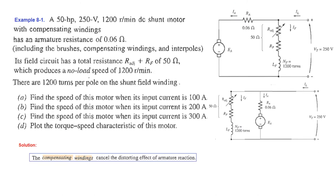Now let's come to example 8.1: a 50 horsepower, 250 volt, 1200 RPM DC shunt motor with a compensating winding has an armature resistance of 0.06 ohms. This is the circuit given in the book — the power supply goes to the field winding and also supplies the motor. The armature resistance is 0.06 ohms, the field resistance is 50 ohms, and we have the total line current, the field current, and the armature current.